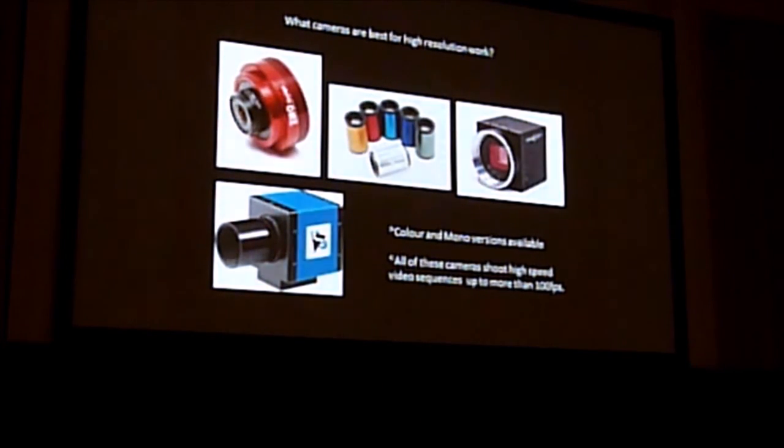You can see here several models that are available today. Starting with the one up there at the top left, that's the ZWO ASI camera. They offer a whole range of different cameras. In the center is the QHY series of cameras. Over at right is the Point Grey series. And at bottom, the DMK series of cameras.